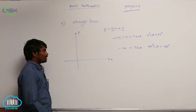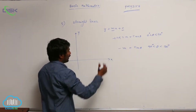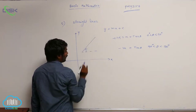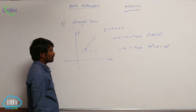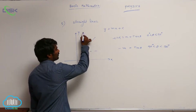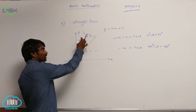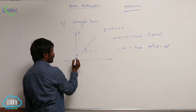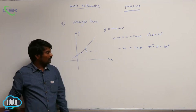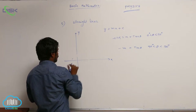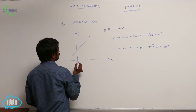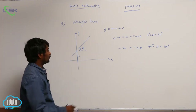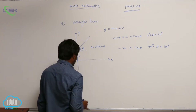If m is positive and c is positive, m is positive means this line should make an angle less than 90 degrees with a positive x-axis. If the straight line makes an angle greater than 90 degrees with a positive x-axis, its slope will be negative. This slope will be positive and the intercept is also positive, that means the line has to intersect the y-axis. This is c, and tan theta is the slope, slope is equal to m, that is equal to tan theta.